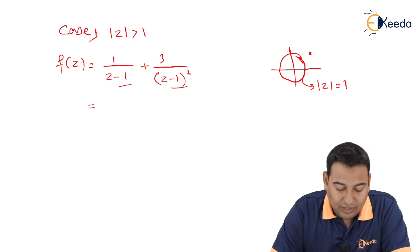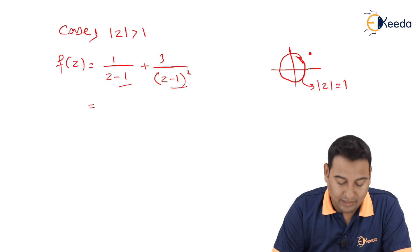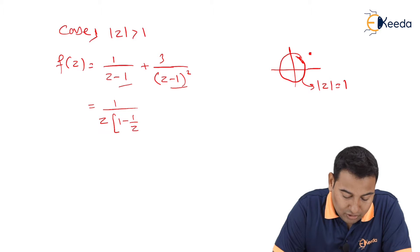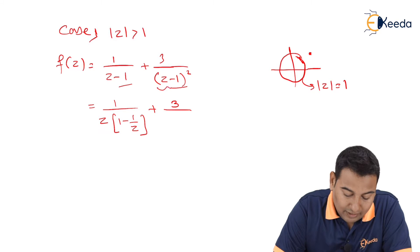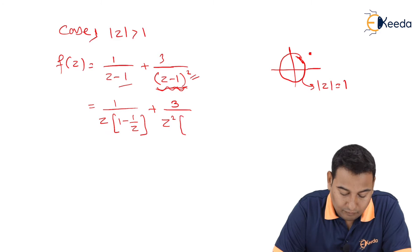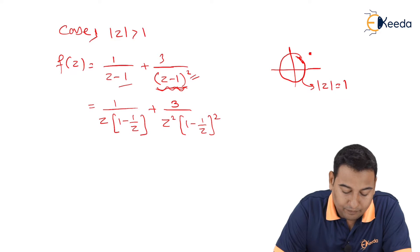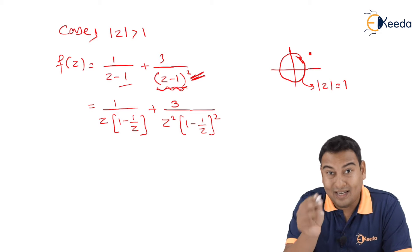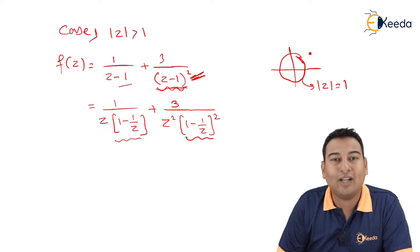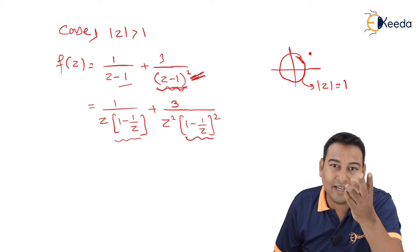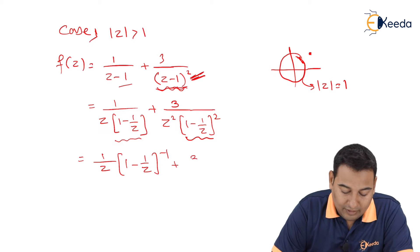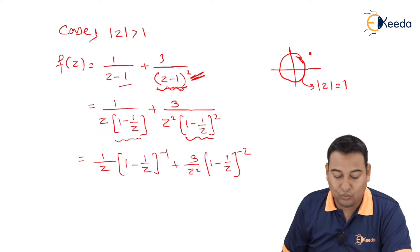Starting with step 1 — take z common. For 1/(z-1), taking z common gives (1/z)·1/(1 - 1/z). For 3/(z-1)², taking z common gives z² outside, leaving (1/z²)·1/(1 - 1/z)². Then step 2: the problem is already in 1-minus format, so no change needed. Step 3: take up — 1/z·(1 - 1/z)^(-1) + (3/z²)·(1 - 1/z)^(-2).